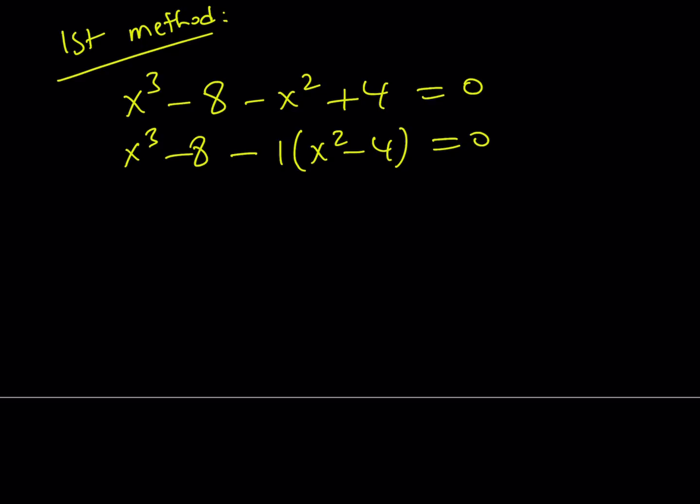A cubed minus b cubed can be factored into a minus b times a squared plus ab plus b squared. And then this is difference of 2 squares so I can write it as x plus 2 and x minus 2. And the whole thing is equal to 0. Now notice that x minus 2 is a common factor so I can take it out.